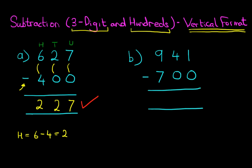So 941 minus 700. Now this is very simple — we're not going to bother labeling the columns, let's just go ahead and do the subtraction. 1 minus 0 is 1. 4 minus 0 is 4. And lastly we have the hundreds column, 9 minus 7 — but 9 minus 7 is 2. And that's our answer. 941 minus 700 is 241. It really is very simple — the subtraction of a three-digit number and hundreds using the vertical format.